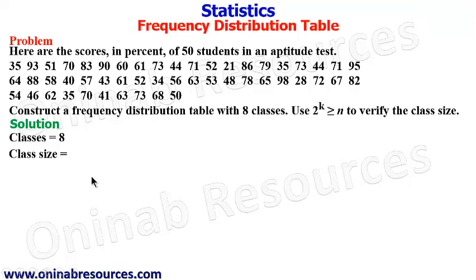To get our class size, it is the highest score minus the lowest score, divided by the number of classes. So we check our data and discover that 98 is the highest score, and the least score is 21. You have to be very careful in getting the highest and the least scores. So we have 98 minus 21, then divide by the number of classes, which is 8 in this case.